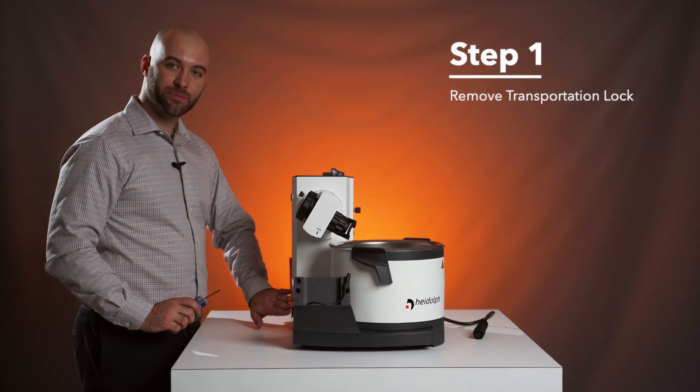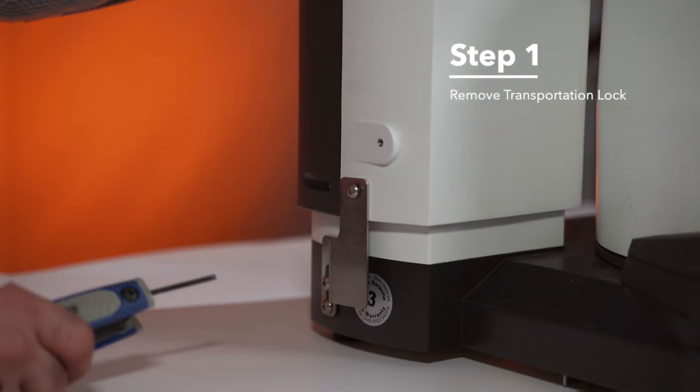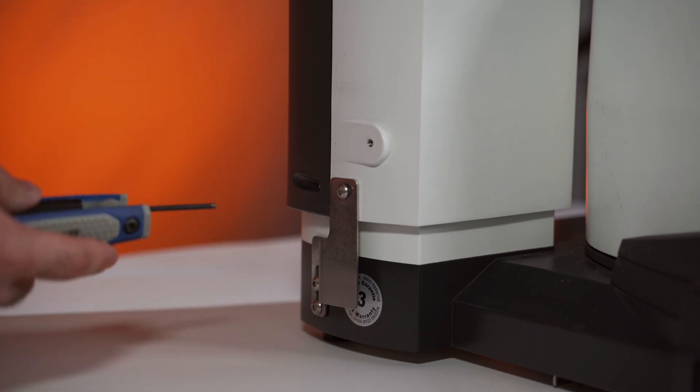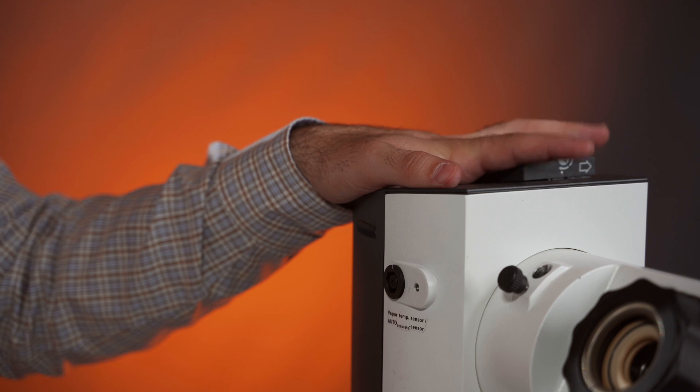Step one, we're going to remove the transportation lock with the size 3 metric Allen. Once the transportation lock is removed, the drive is going to lift up. So to make it easier on myself, I'm going to put one hand on top of the drive while I remove the first screw.